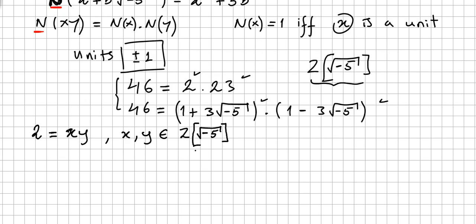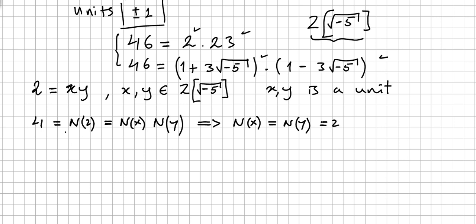We use a technique from before. Suppose 2 equals x times y, where x and y are in the ring but neither x nor y is a unit. Then 4 equals N(2), and N(2) must equal N(x) times N(y), which means N(x) and N(y) should both equal 2. But this is impossible — there are no integers a and b with a² + 5b² = 2.